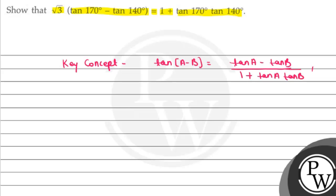Okay, so here you have your question. Your question is √3 (tan 170° - tan 140°) is equal to 1/(1 + tan 170° tan 140°). So after simplifying this equation we can write...